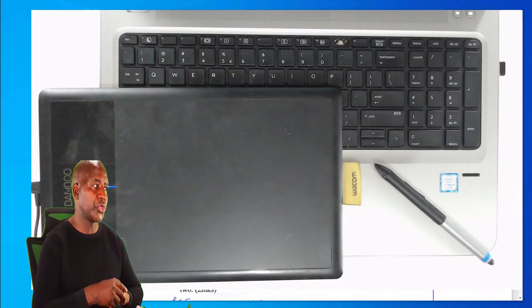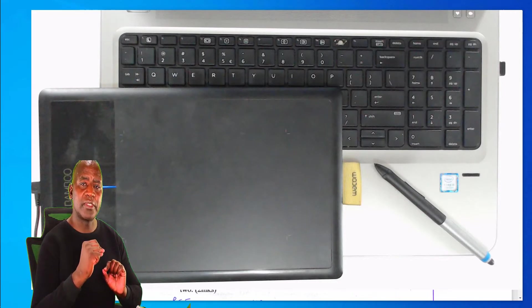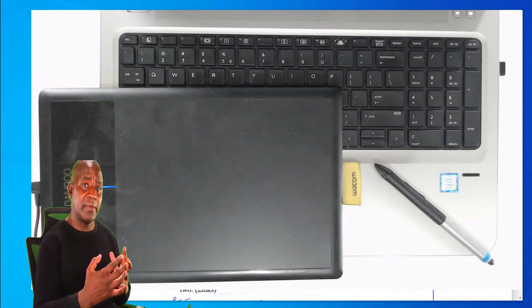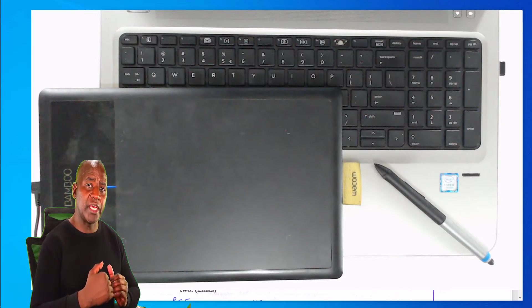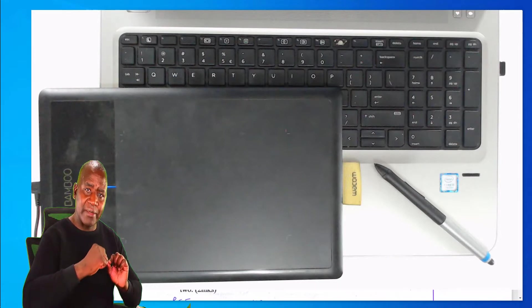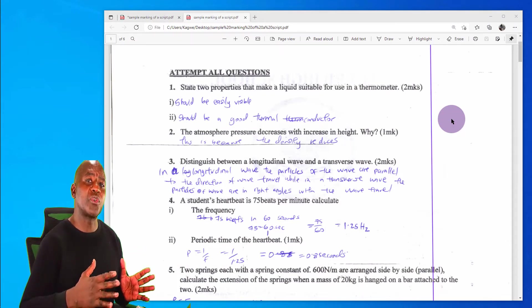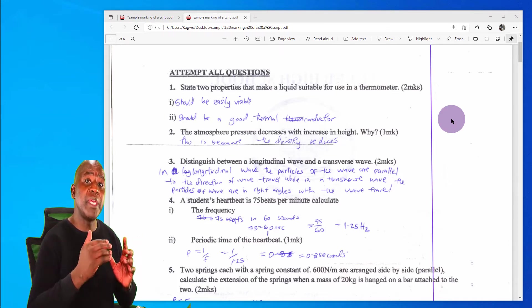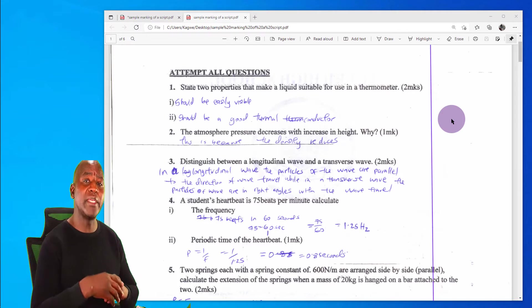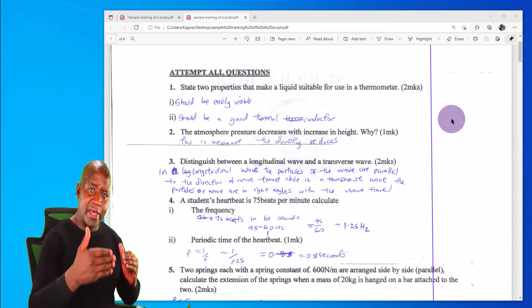I would send some work to the student in the form of PDF. The student can download this PDF, print it to get a hard copy, and then attempt the assignment. Then the student is going to scan that script in PDF format and mail it to me.